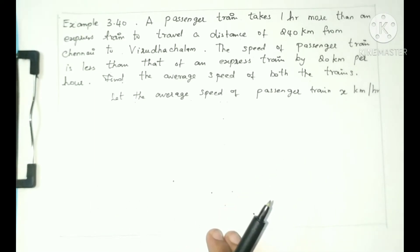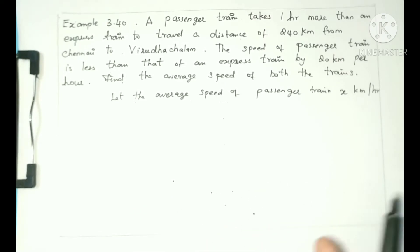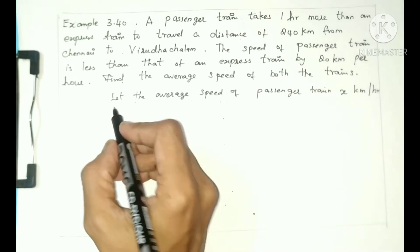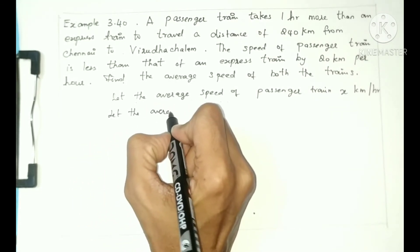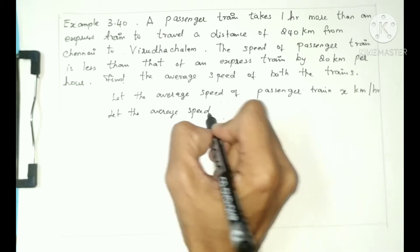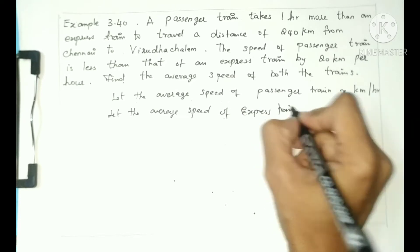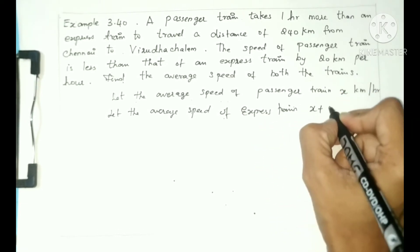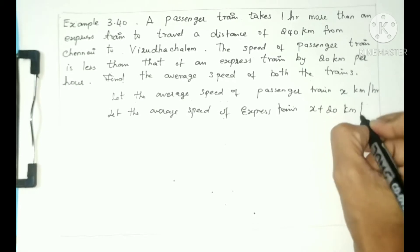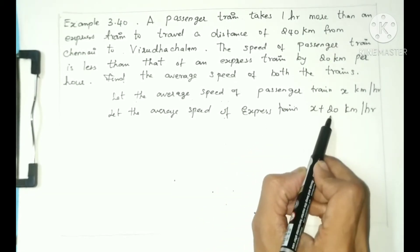The passenger train has 20 kilometers per hour less than the express train, which means the express train has 20 kilometers per hour extra. So let the average speed of the express train be x plus 20 kilometers per hour.